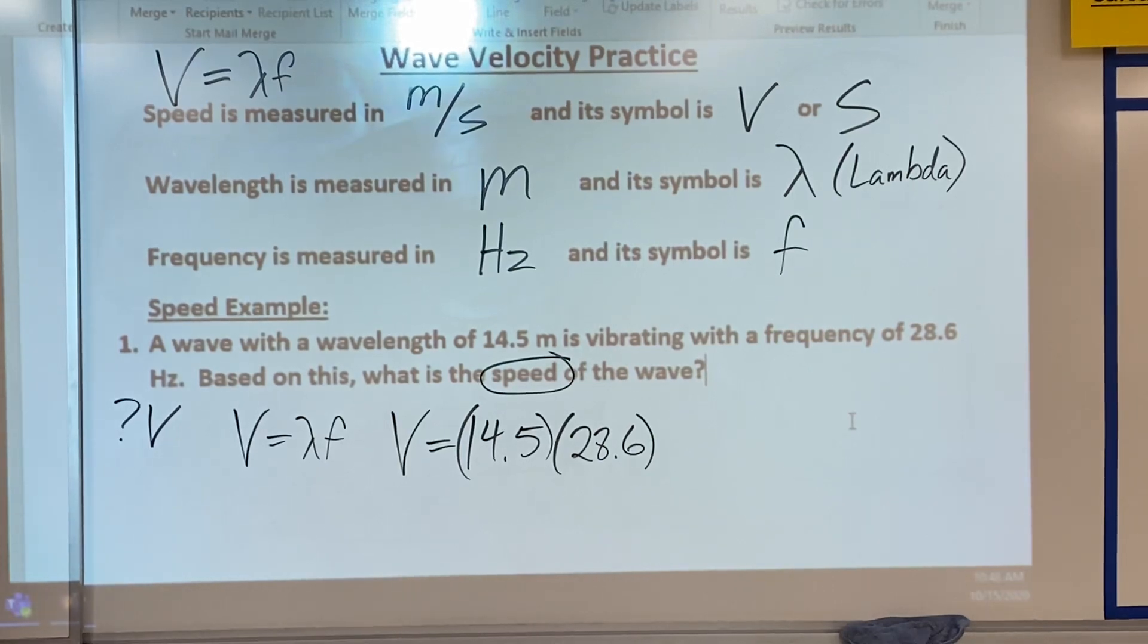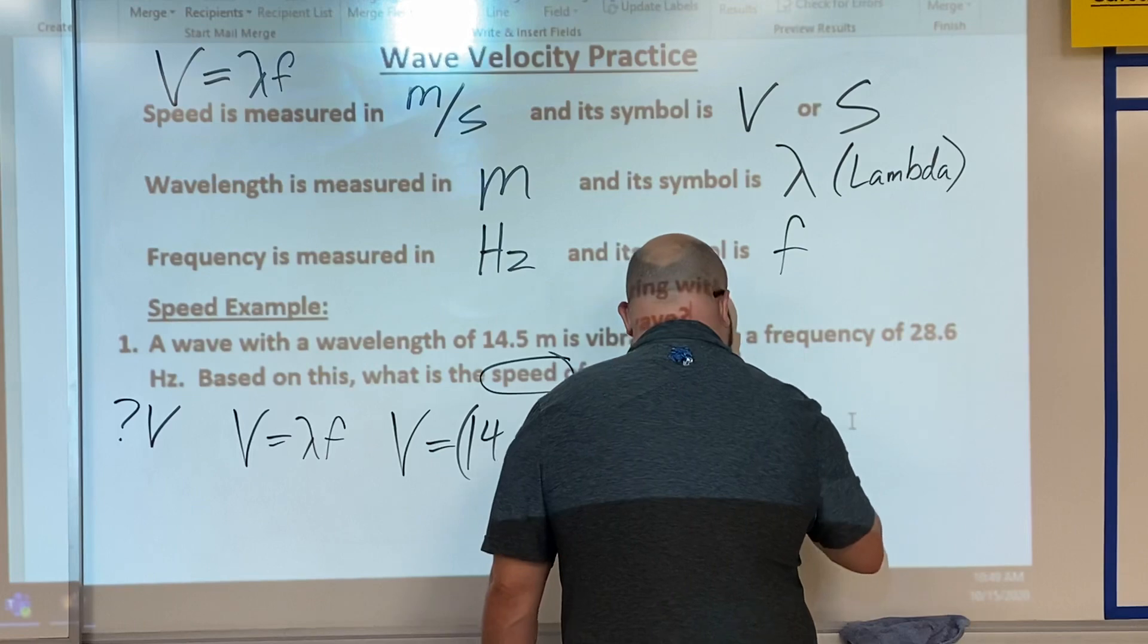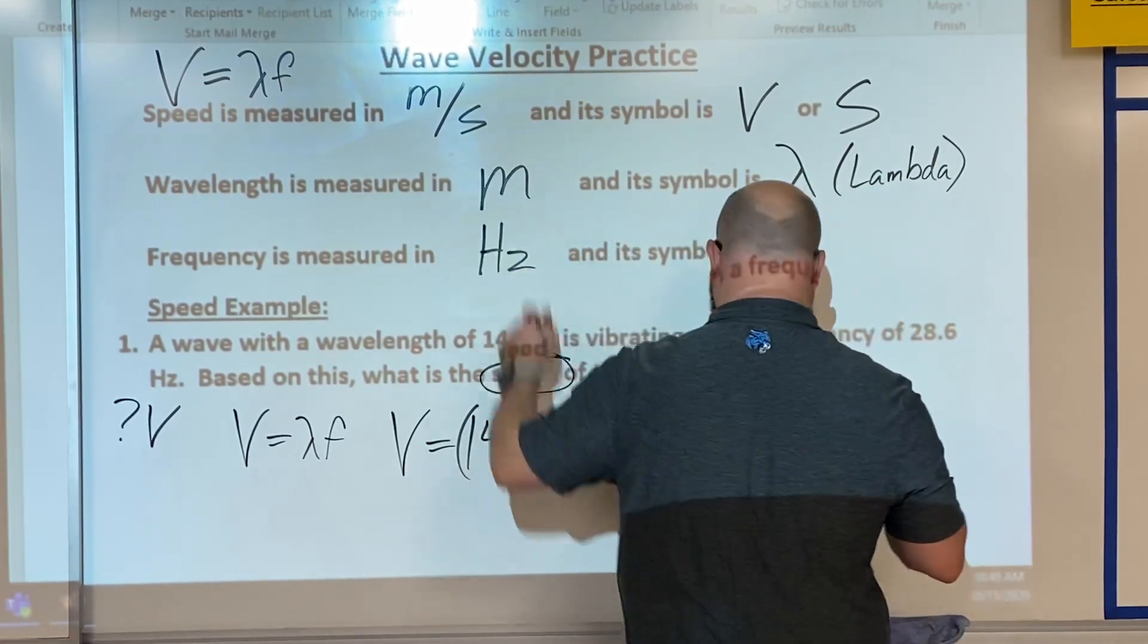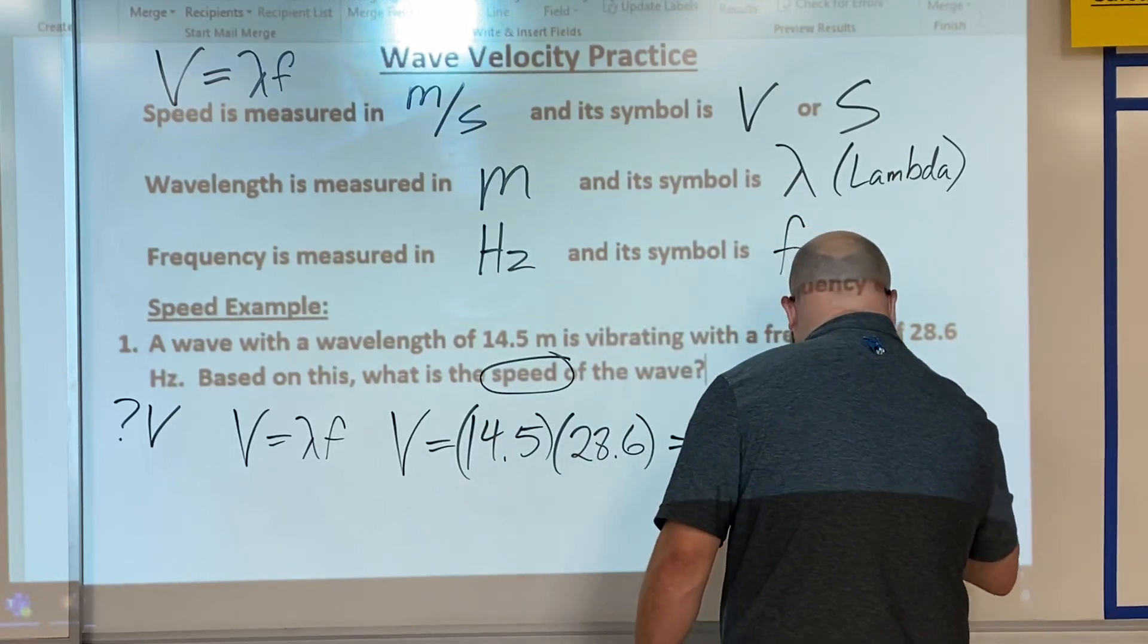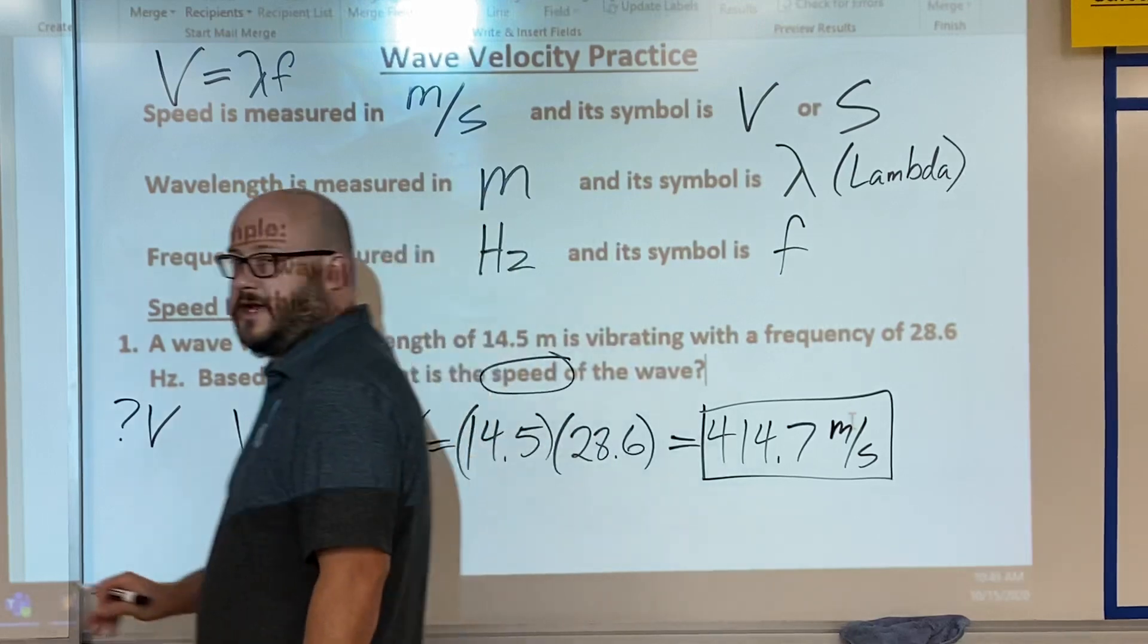14.5 times 28.6 equals 414.7. And then our unit for speed is going to be meters per second, simple as that.